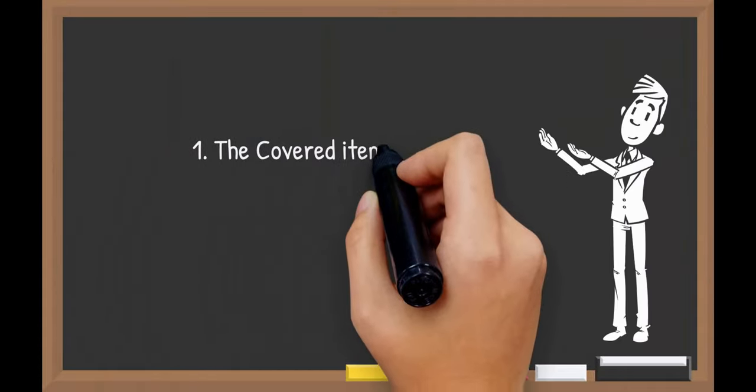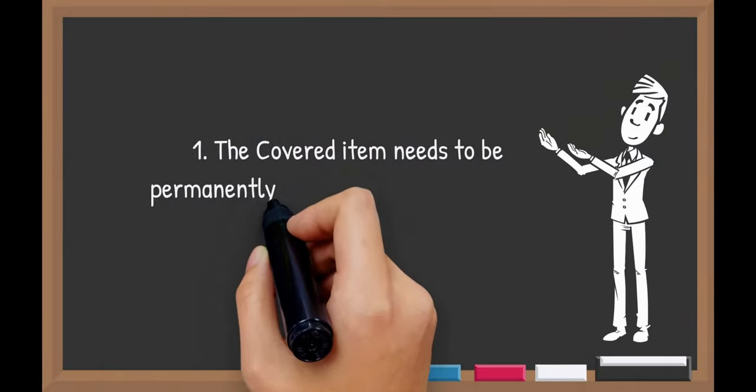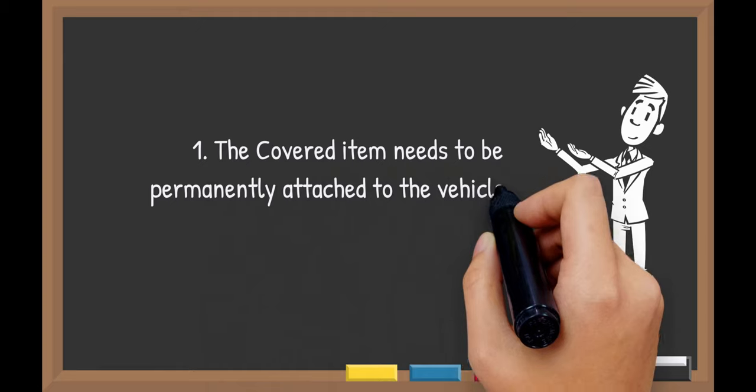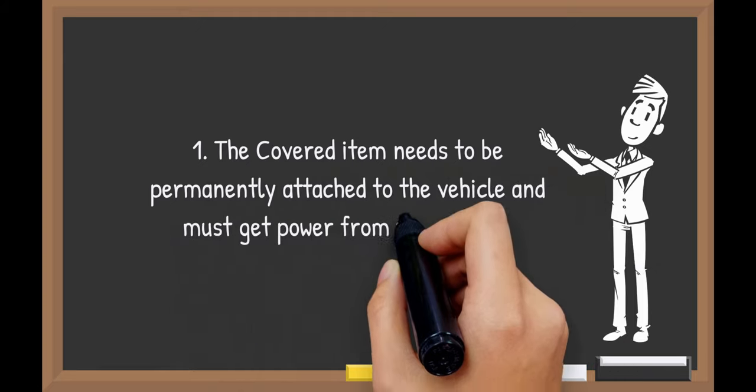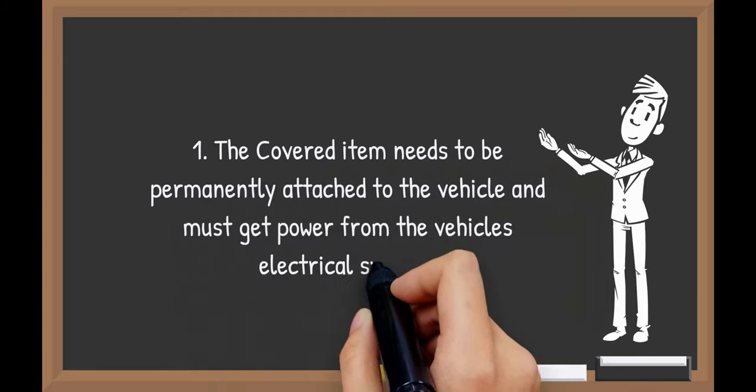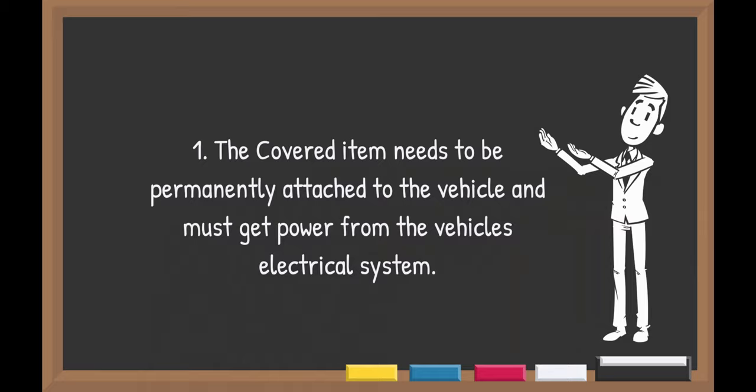There are two main things to note with this coverage. Number one, the covered item needs to be permanently attached to the vehicle and must get power from the vehicle's electrical system.